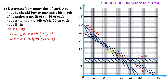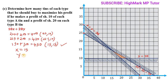At the third vertex, point (15, 15): 10×15 + 20×15 = 150 + 300 = 450 shillings. Comparing the three values — 400, 425, and 450 — the maximum profit is 450 shillings, achieved when x = 15 and y = 15. So by inspection, 15 tins of type A and 15 tins of type B give the maximum profit.